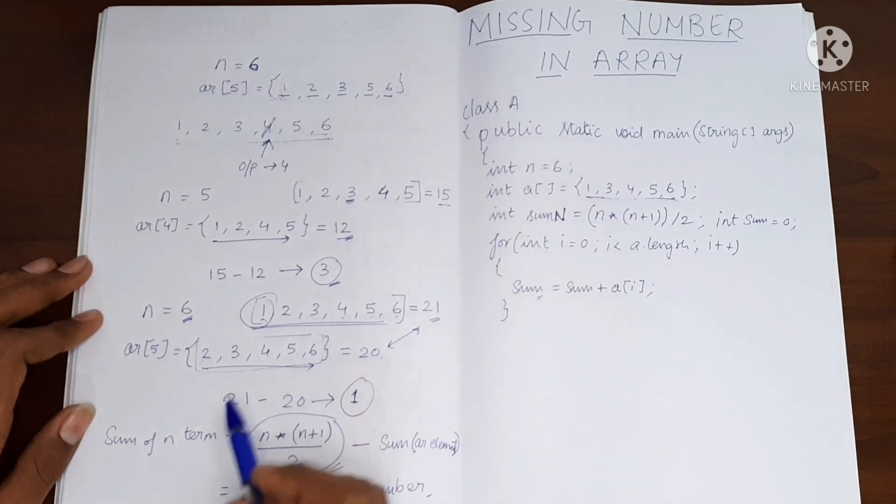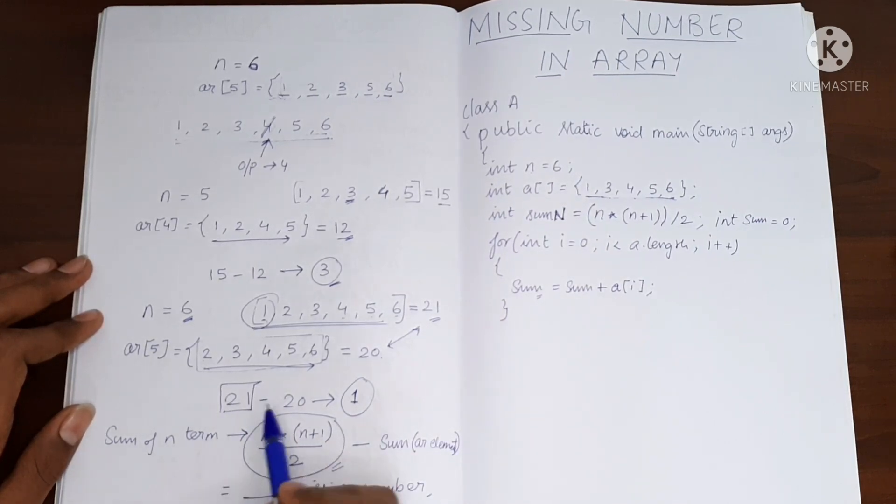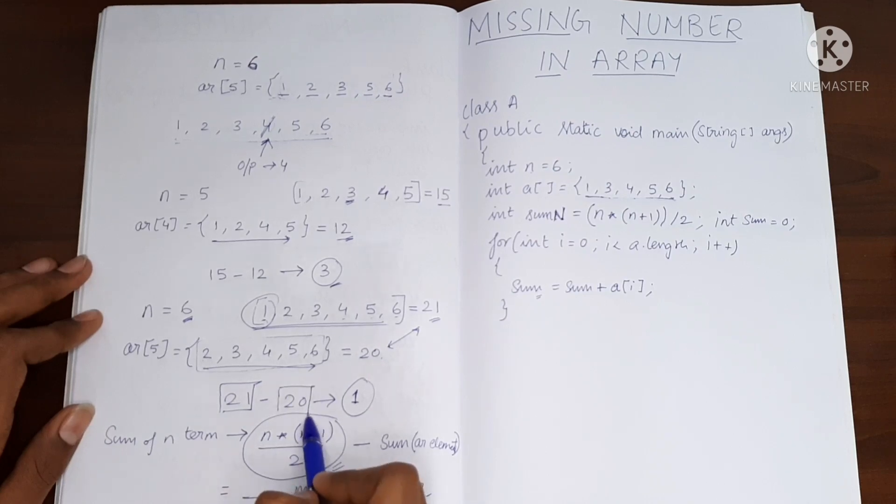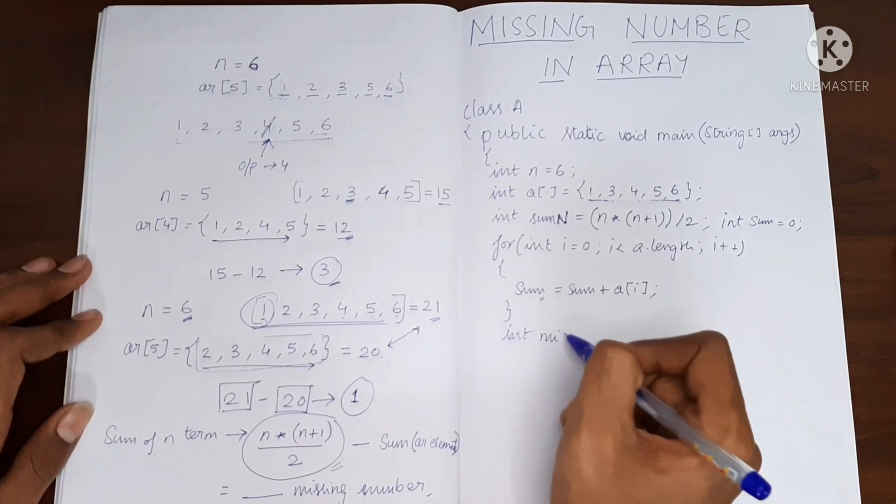Now what was the last step? We have to subtract sum to n elements and subtract the total of the array. So now let's call it as missing value.